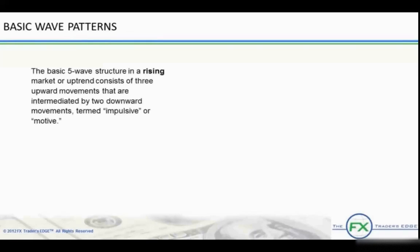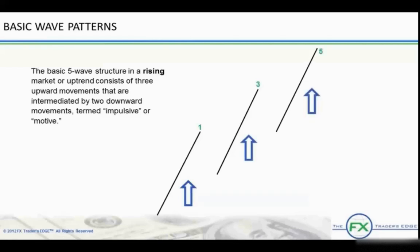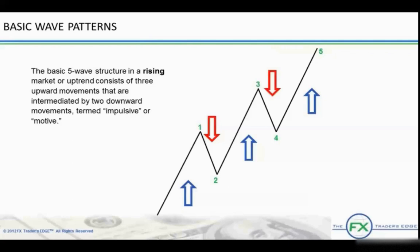The basic five-wave structure in a rising market or uptrend consists of three upward movements that are intermediated by two downward movements. This five-wave structure is termed motive. Waves one, three, and five are called impulsive or motive waves and move in the direction of the trend, and in this example, an uptrend, they are rising waves. Waves two and four are called corrective waves and are counter-trend interruptions, moving against the trend. This is the basic five-wave count.